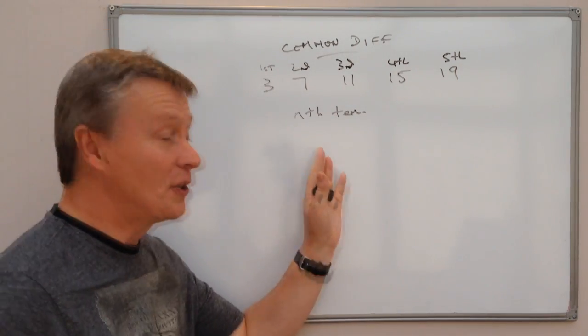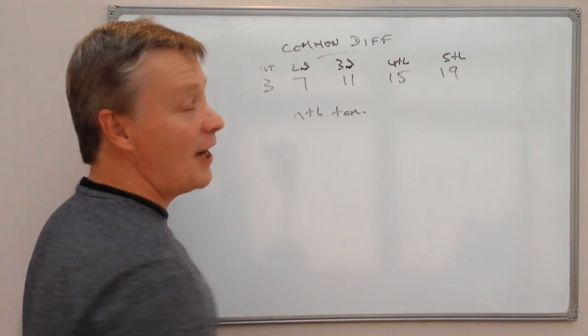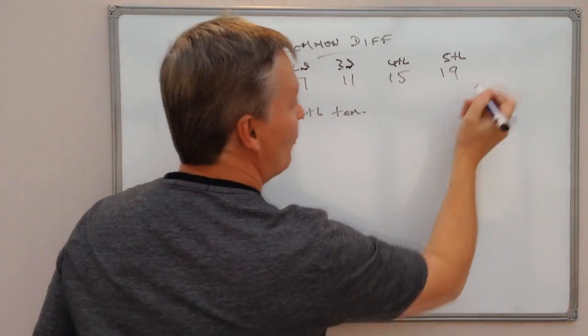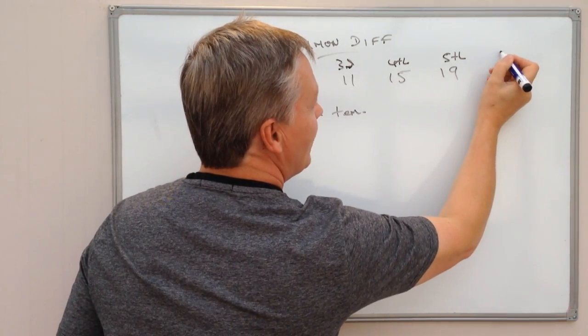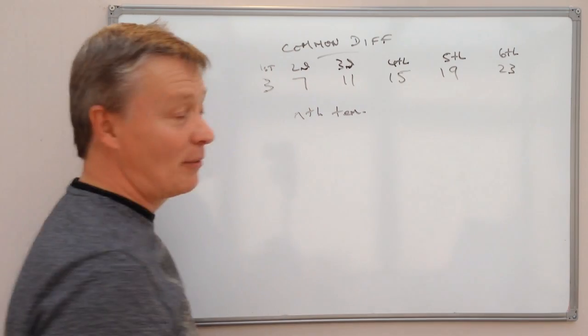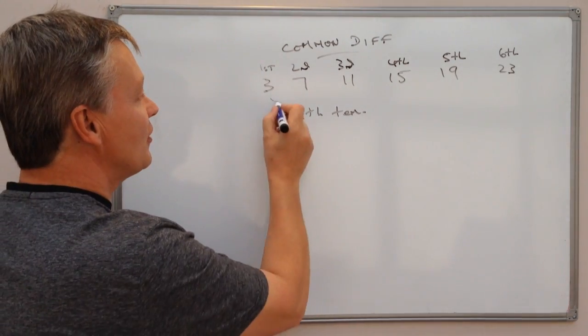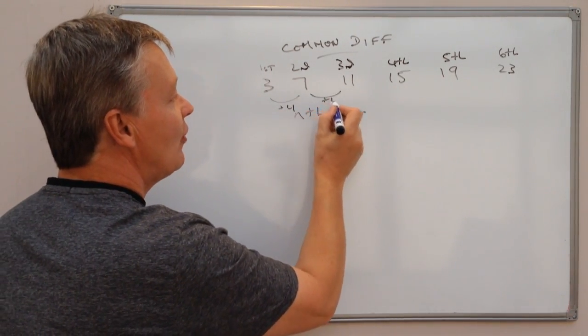And I guess you could guess the next one, which is going to be 19 plus 4, which is going to be 23. So the sixth term is going to be 23 because the difference between each of these is 4.